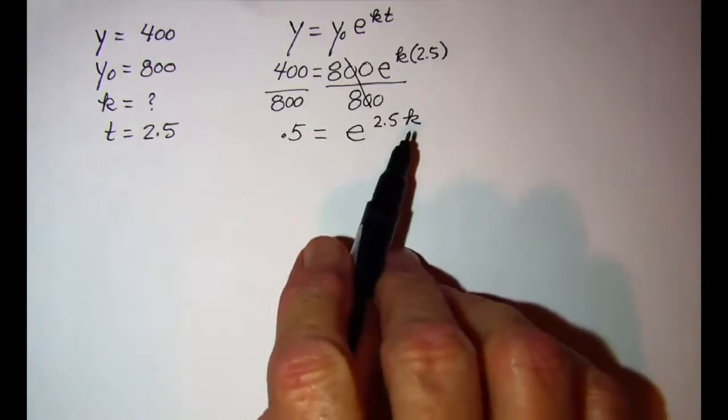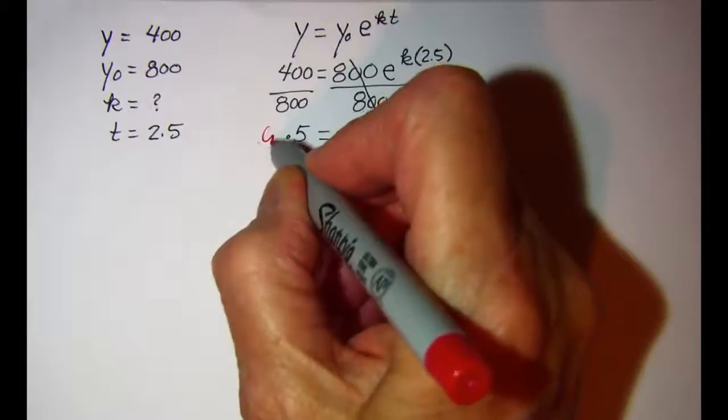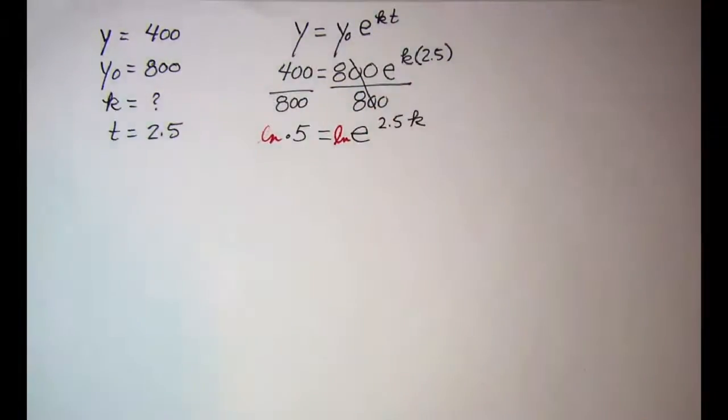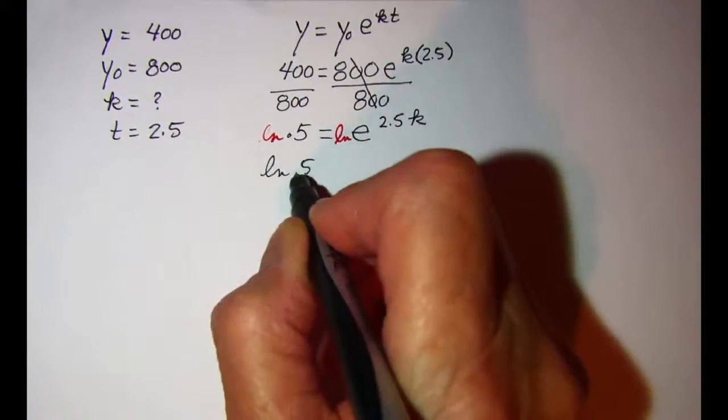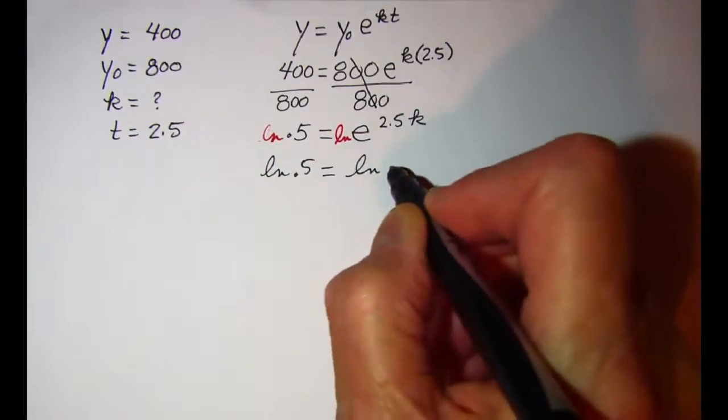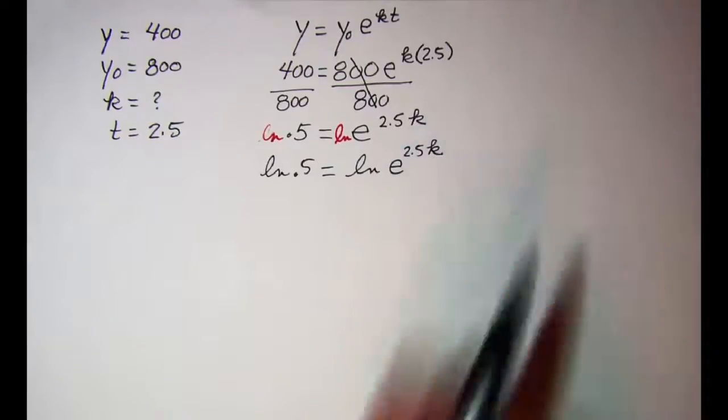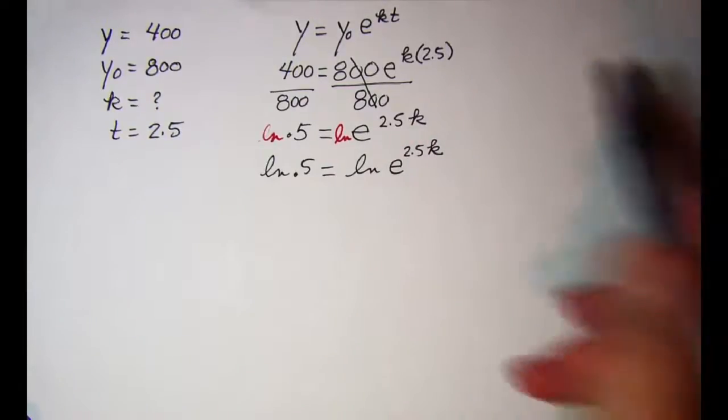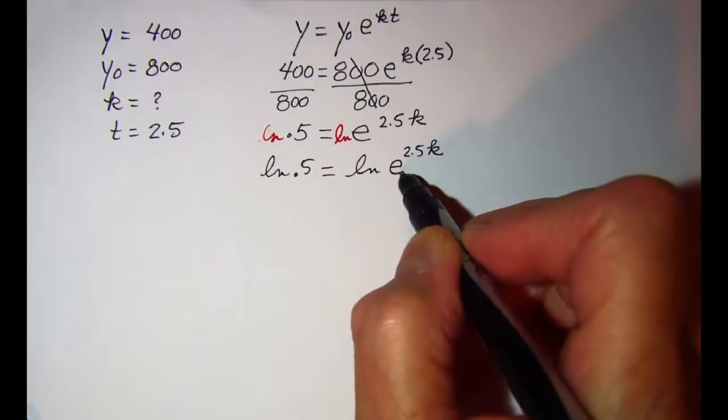Now since our variable is in the exponent we need to ln both sides to get it down on the main line. So ln both sides and we now have ln 0.5 equals ln e raised to the 2.5k.